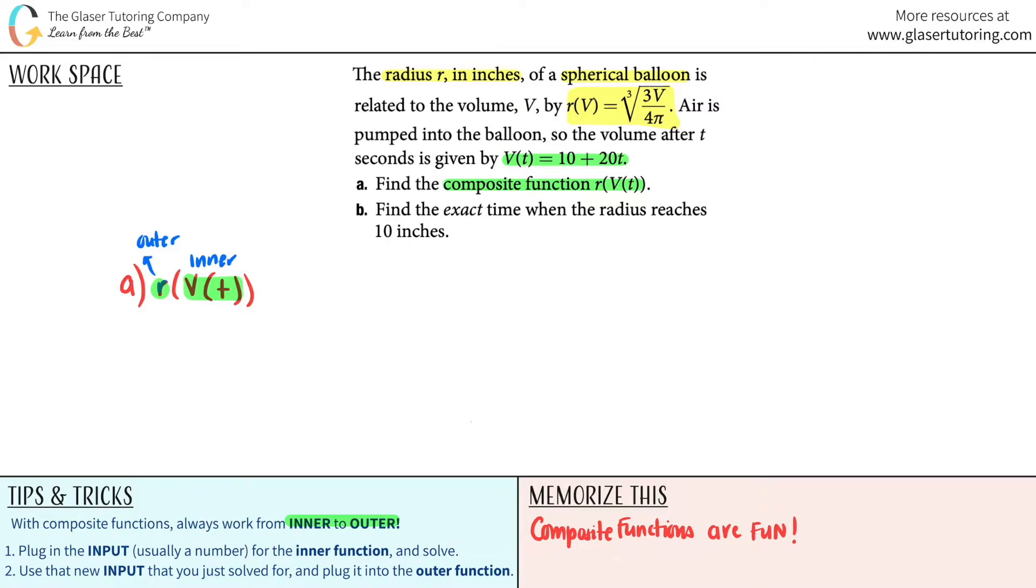So if we work from inner to outer, the first thing we're going to do is we're going to plug in that input, which is usually a number, into the inner function and solve. But however, our inner function is just V of t.